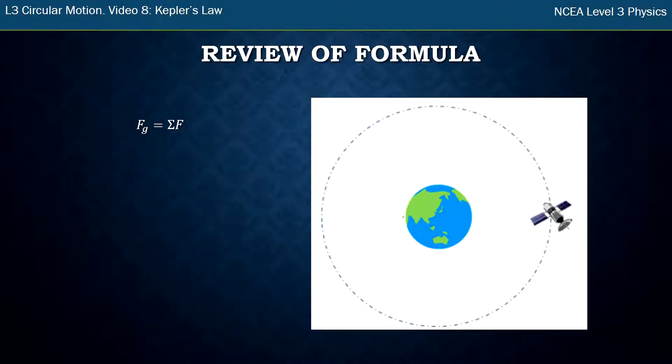When equating the two formulas, the force of gravity and the centripetal force, let's remind ourselves what all the letters mean. The capital G is a universal gravitational constant, an unchanging number that doesn't matter what planet you're on. It's the same value and is given to you in exams.